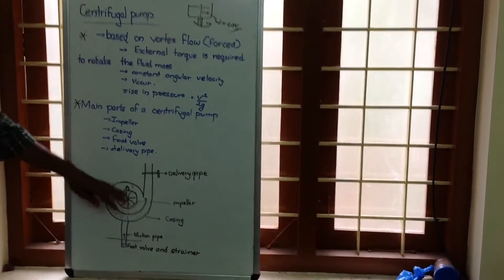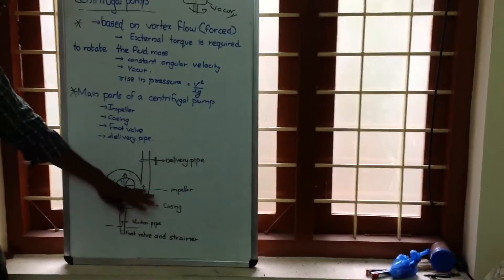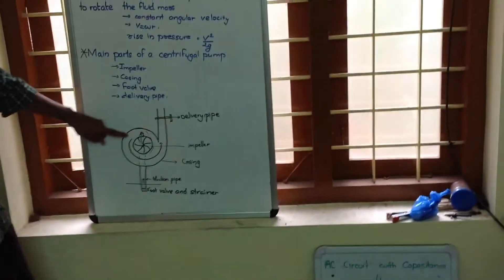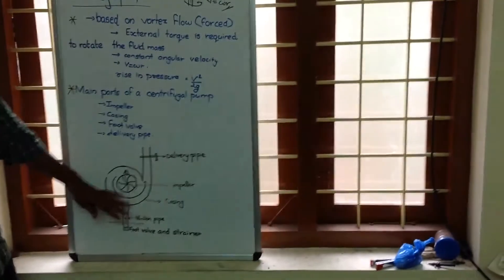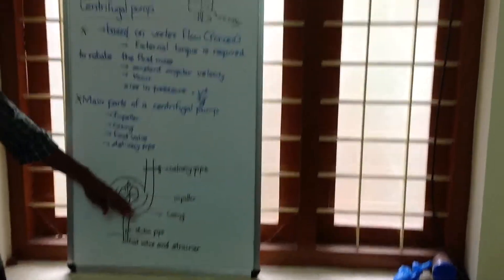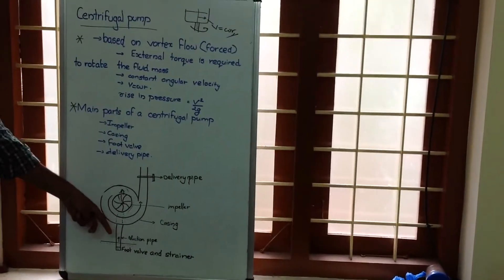Casing is having an increase in area of construction because as water moves through this casing, because of this increase in area of construction, the pressure energy increases.